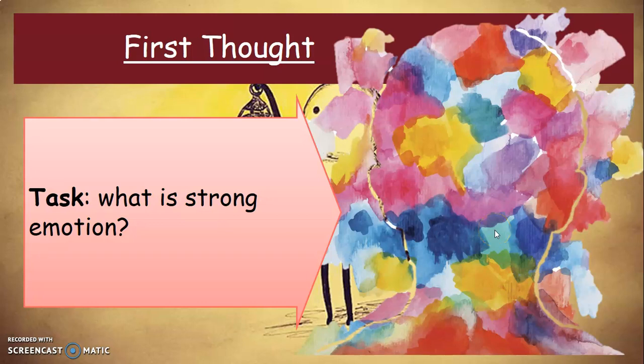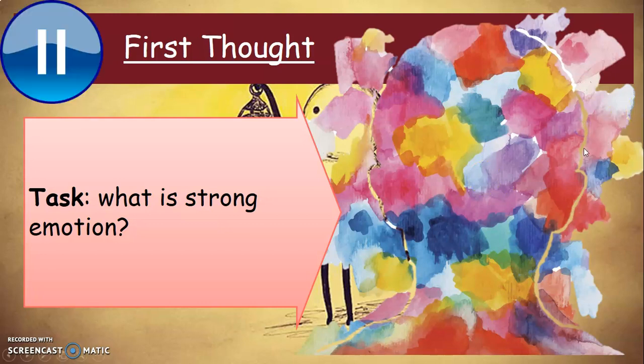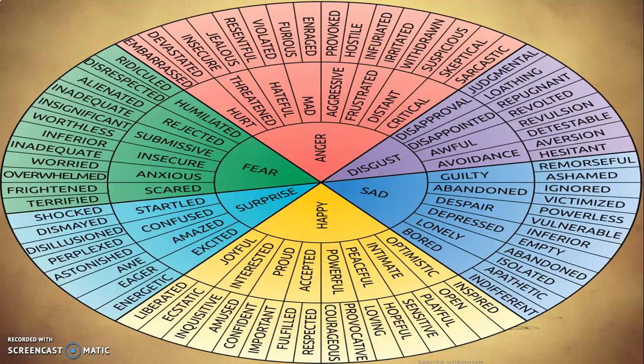We are looking at Romeo and Juliet and how to answer GCSE questions. To begin with, think about what is a strong emotion — pause the video and complete this task. Hopefully you've thought of the six main ones in the middle and maybe gone into more detail. The second circle has some deeper emotions, like whether aggression or hatefulness is stronger than anger. The outside circle gives you an idea of why people feel certain emotions — we'll use this later to help you think more critically.